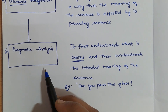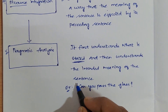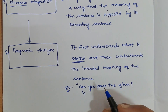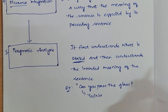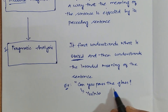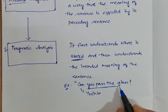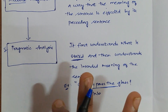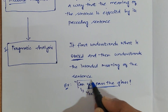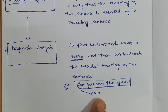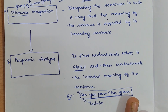If there is no pragmatic analysis phase — that is, only up to discourse integration — the computer would simply answer yes or no and perform no action. Pragmatic analysis is used to make the computer perform actions. So when you pass this sentence to the computer, it will actually pass the glass. Pragmatic analysis first understands what is stated and then understands the deeper meaning of the sentence.